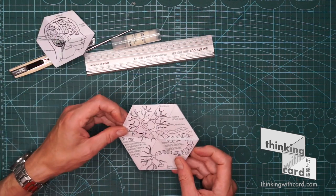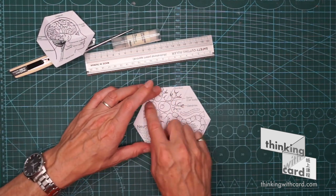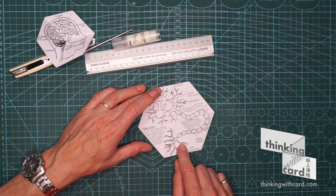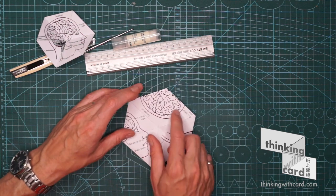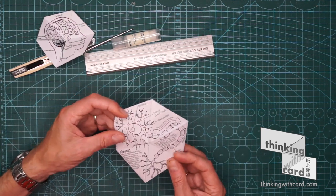And the way to open it, first of all we know that this is the front. Because the image is complete. If we look at the back, then the image is incomplete. It doesn't match up. So we know this is the front.